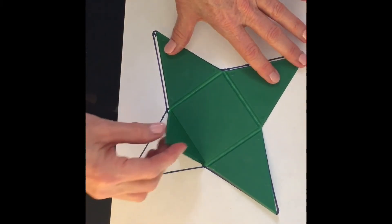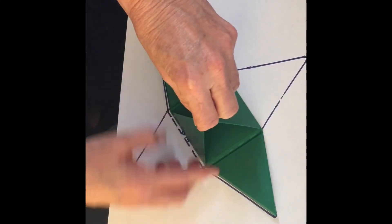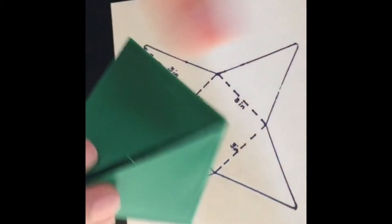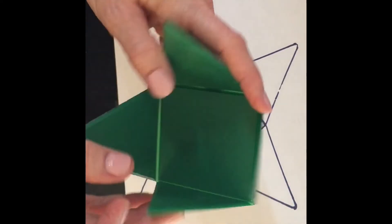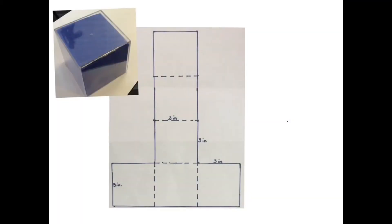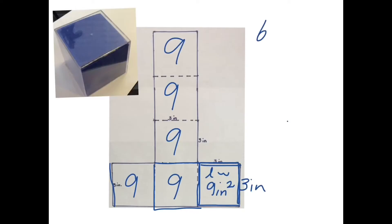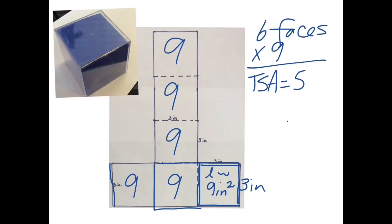Here is the object the net is actually representing. The square is your base, and the triangular sides fold up to become your lateral faces — everything except for the bases. Adding all pieces together gives your total surface area. Each square face on the cube is three inches by three inches, so area equals length times width — three times three equals nine square inches. Since a cube has six congruent faces, six times nine gives a total surface area of 54 square inches.